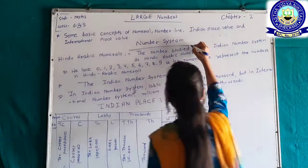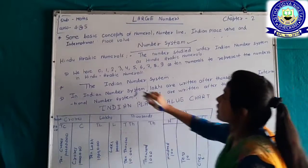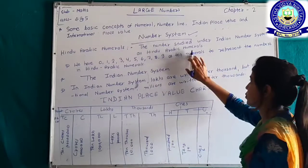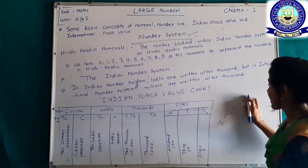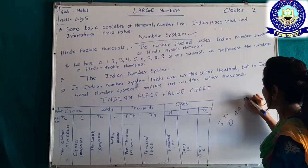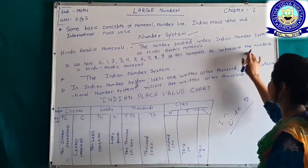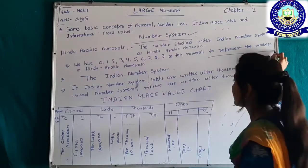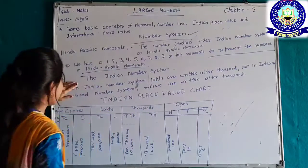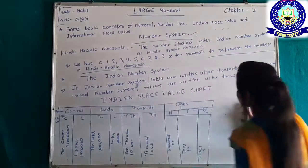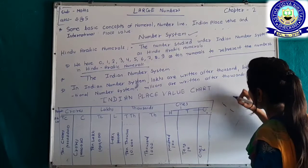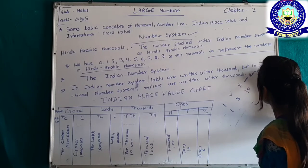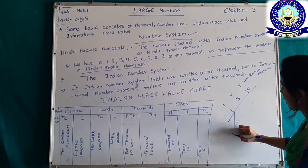Next point is our number system. In the Hindu-Arabic numeral system, which comes under the Indian number system, there are 10 digits — 0 to 9 — used to represent numbers. In Roman numerals we write I for 1, V for 5, X for 10, whereas in Hindu-Arabic numerals we use these 10 digits.